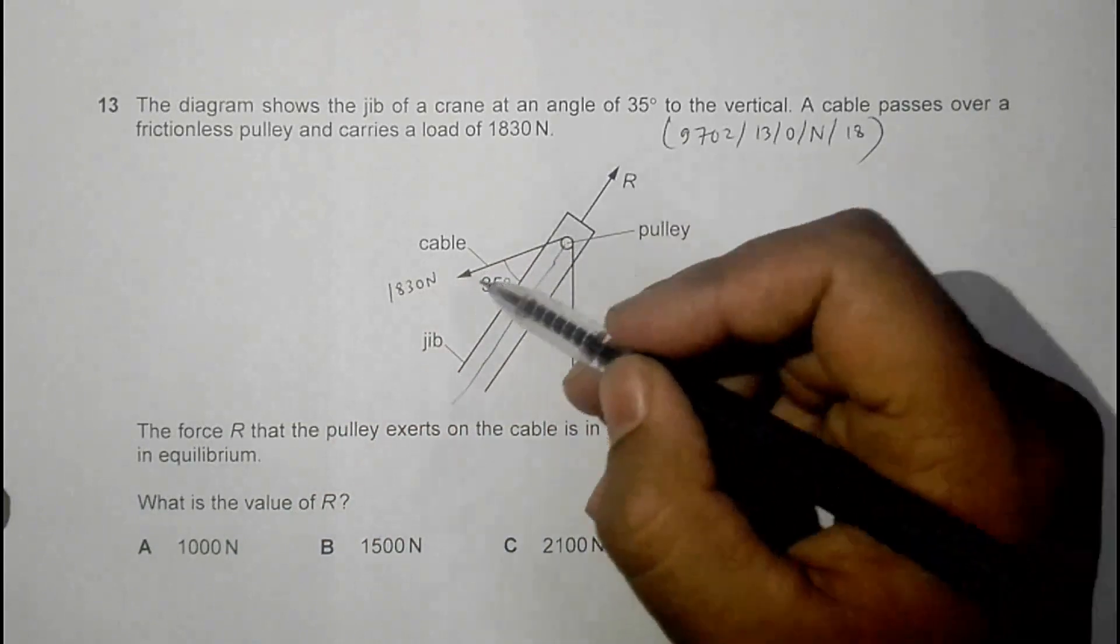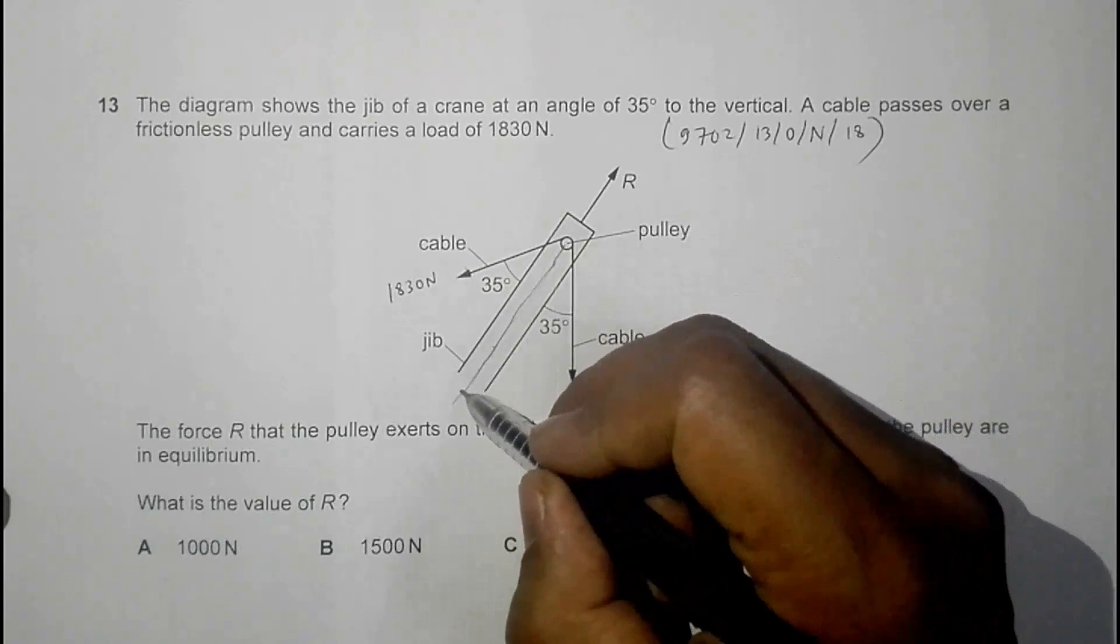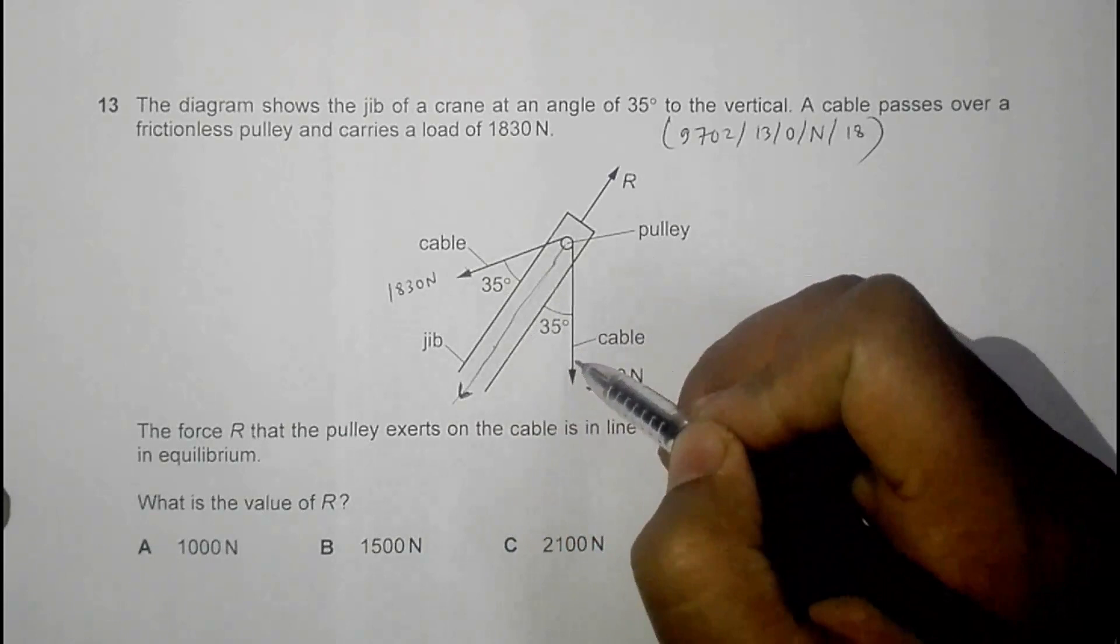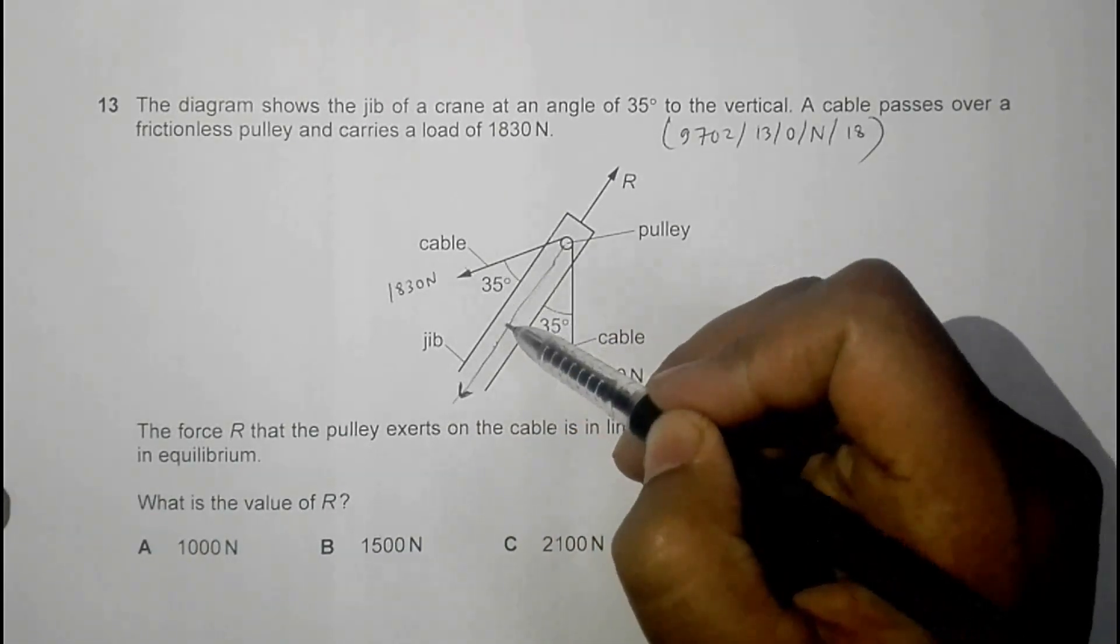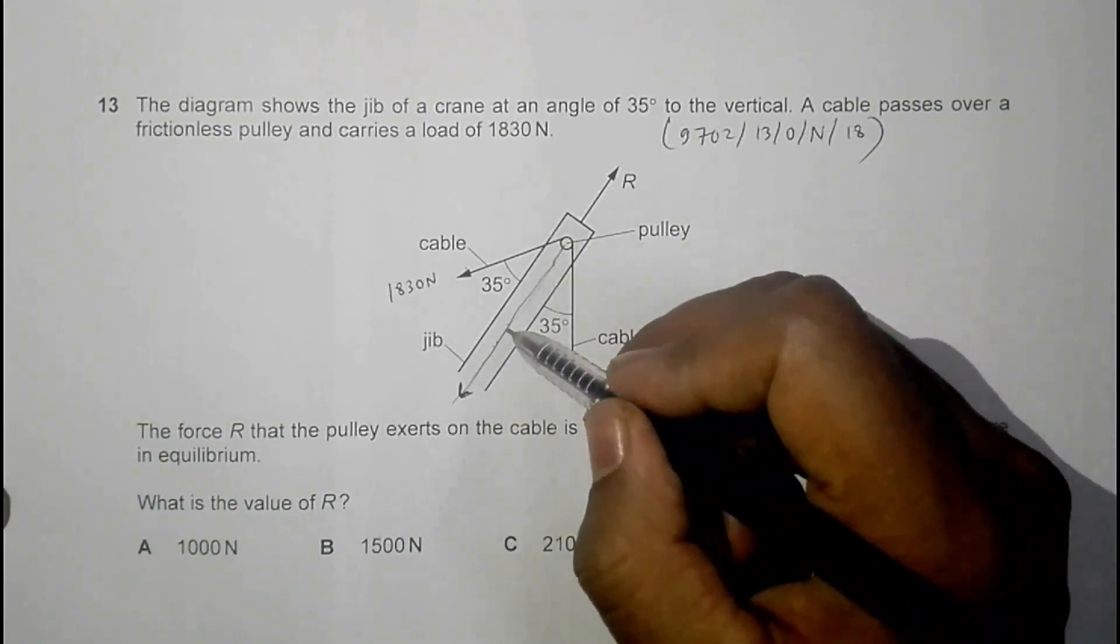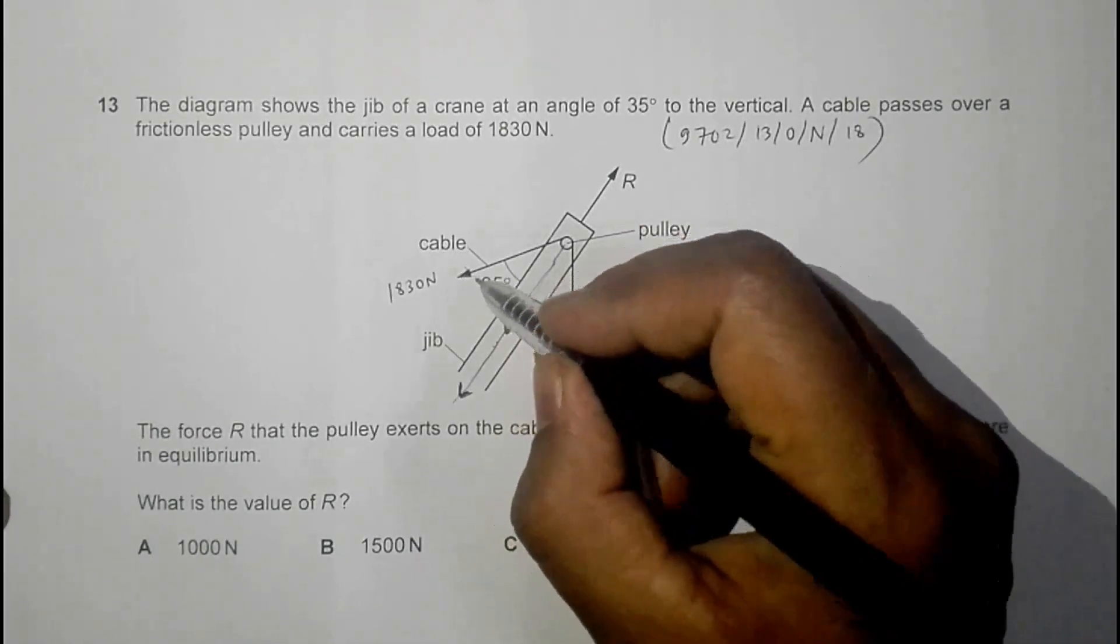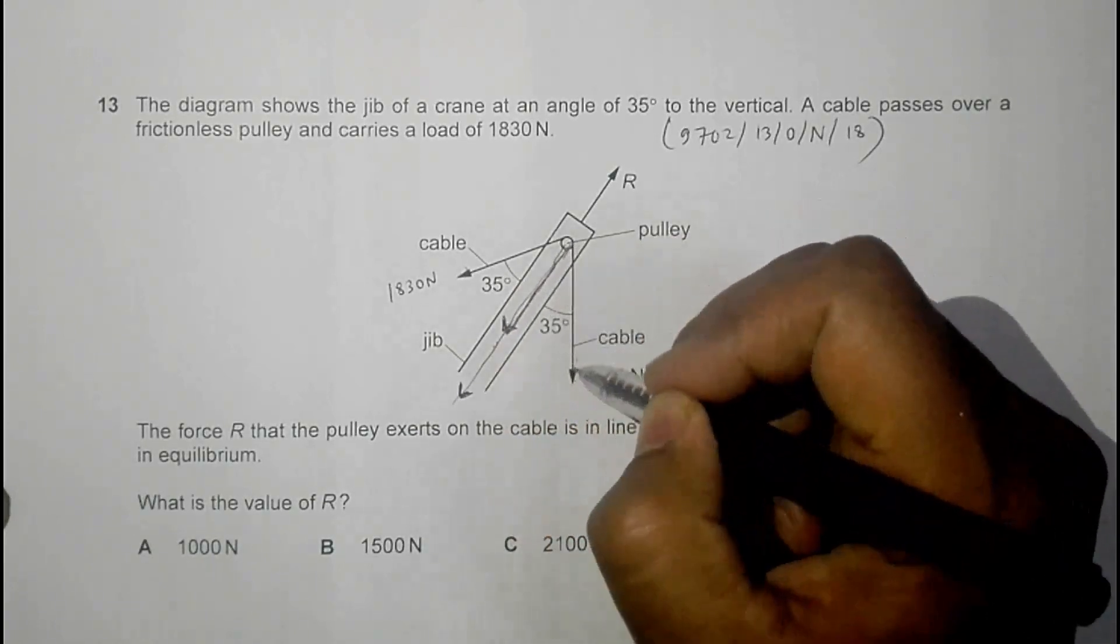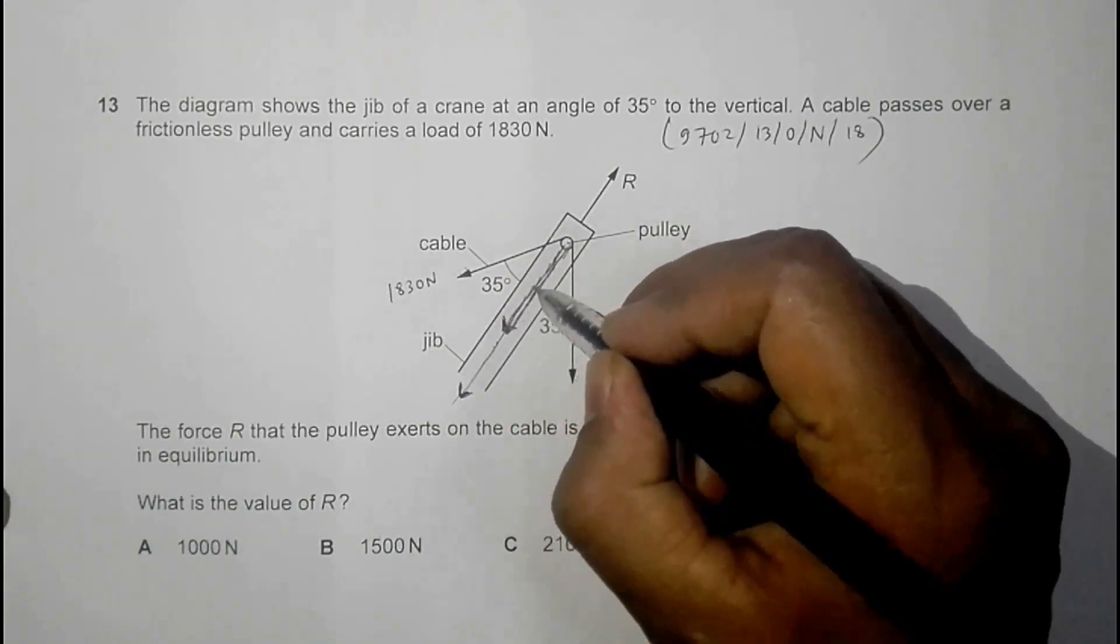Because of this force and because of this force, the resultant here will be somewhat like this. It will be equal to the component of this force in this direction plus the component of this force in this direction. So we have two things here: one is the component of this force in this direction, another is the component of this force in this direction.